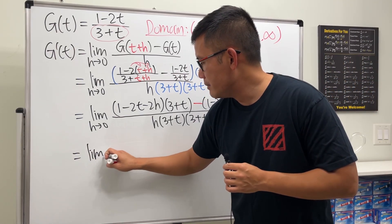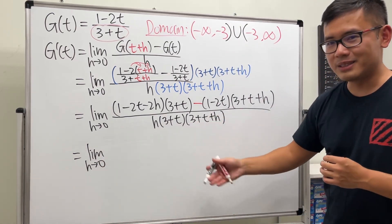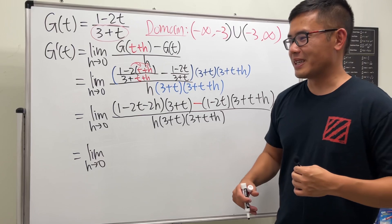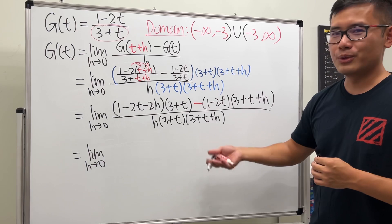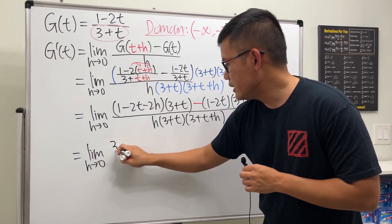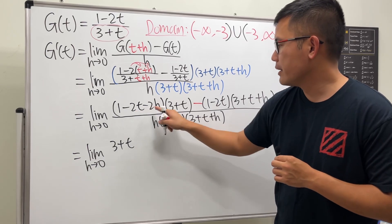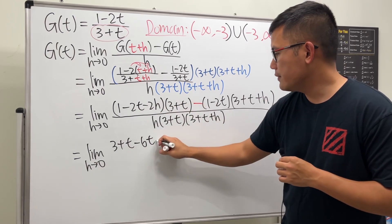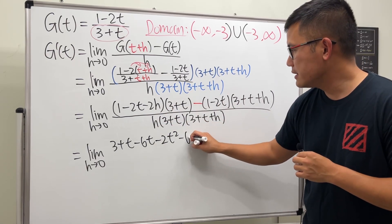Let's go ahead and simplify — limit as h approaches 0. Multiplying out the first part: 1 times (3 + t) gives 3 + t; negative 2t times (3 + t) gives -6t - 2t²; and the -2h term gives -6h - 2th.